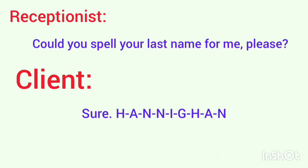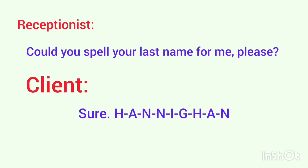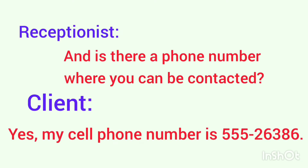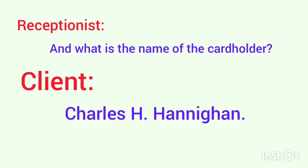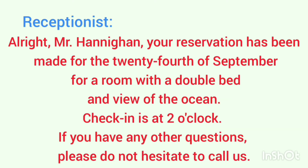Could you spell your last name for me please? Sure. H-A-N-N-I-G-H-A-N. And is there a phone number where you can be contacted? Yes, my cell phone number is 555-26386. Wonderful. Now I'll need your credit card information to reserve the room for you. What type of card is it? Visa. The number is 987-654-321. And what is the name of the card holder? Charles H. Hannigan. Alright Mr. Hannigan, your reservation has been made for the 24th of September for a room with a double bed and a view of the ocean.